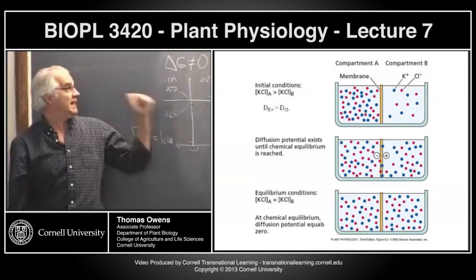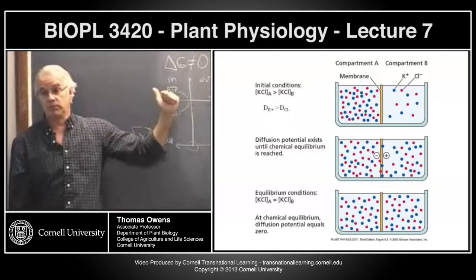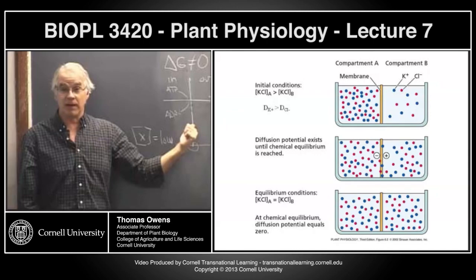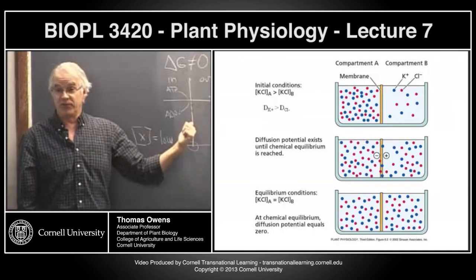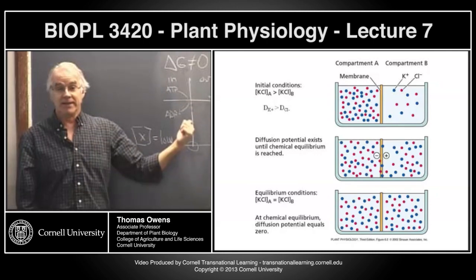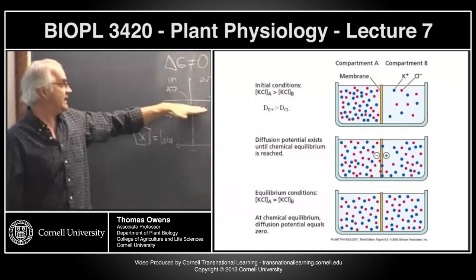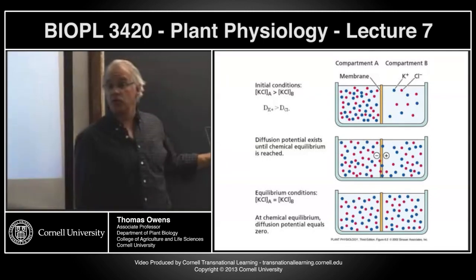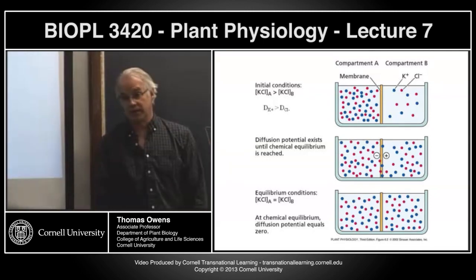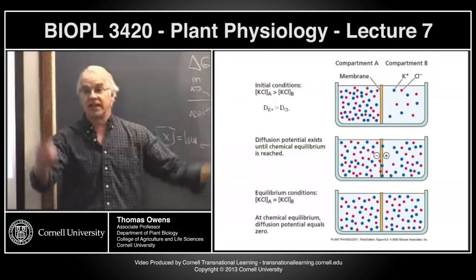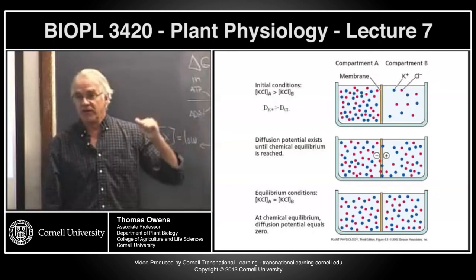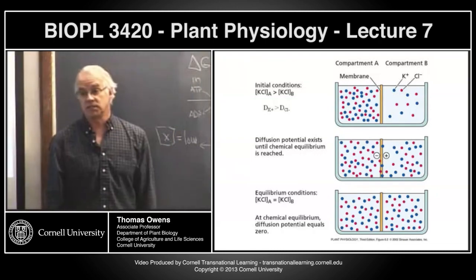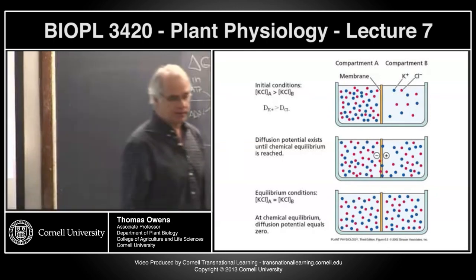To maintain steady state, you need to continually put energy in — this describes life. Life is constantly investing energy to keep the system away from equilibrium so things can move down gradients in the direction the cell wants them to move. Cells are investing energy to perturb the system away from equilibrium so that moving towards equilibrium facilitates processes the cell wants to have happen.